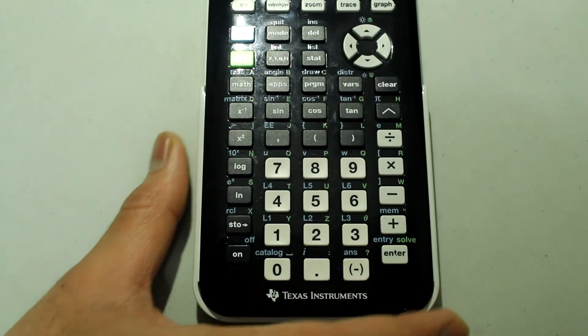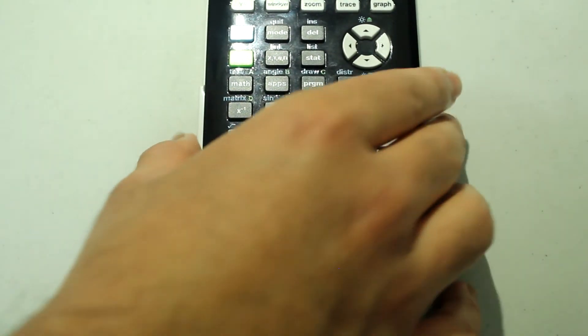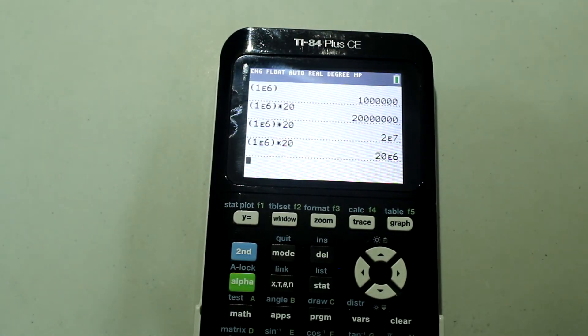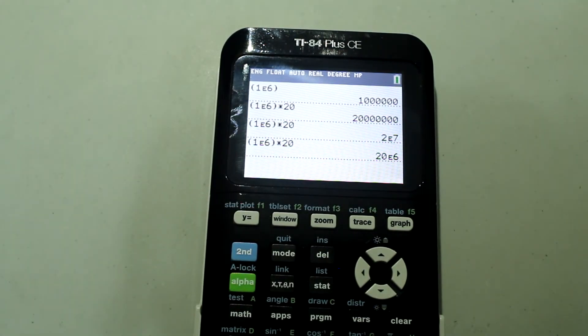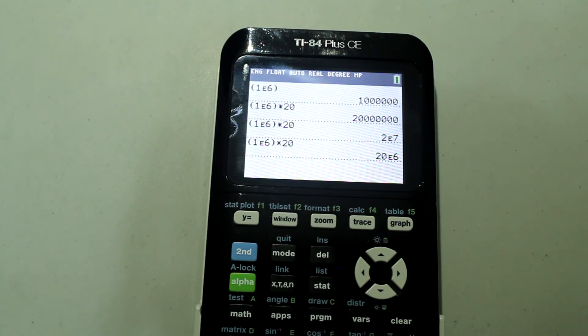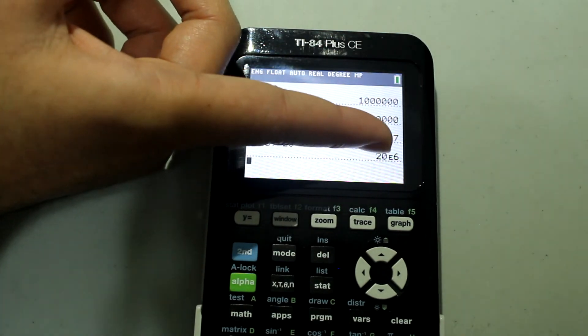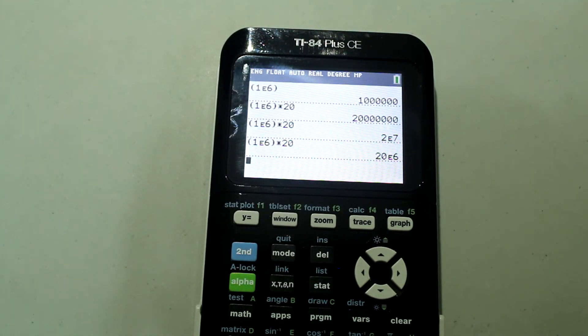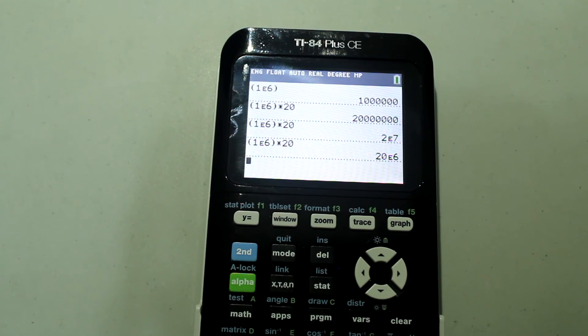And once again, I'm just going to press enter. And the most recent calculation is once again carried out. And we get twenty times ten to the sixth as our answer. In engineering notation, the powers are always multiples of three. So three, six, nine, or negative three, negative six, negative nine, etc.